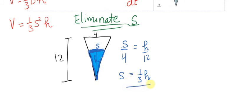Now why is that helpful? Because we can take this information and substitute it back in here. So now we can say that the volume is equal to 1/3.